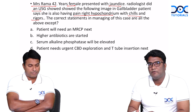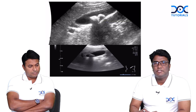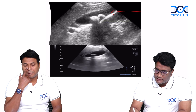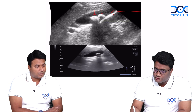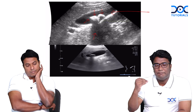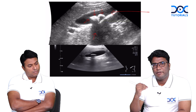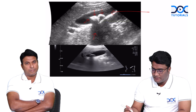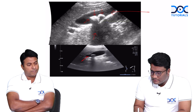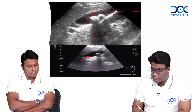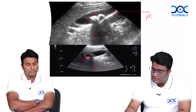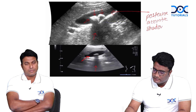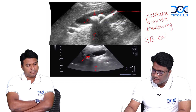Let's look at the ultrasound image given and try to understand what this case is all about. The ultrasound image is showing the gallbladder, and within the lumen of the gallbladder you can see some hyperechoic areas with posterior acoustic shadowing on the dependent portion of the gallbladder. When you have a hyperechoic area within the lumen of the gallbladder on the dependent portion with this posterior acoustic shadowing, we think of it as calculi. This is GB calculi — a gallbladder calculi.